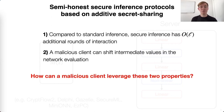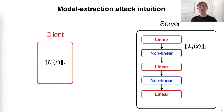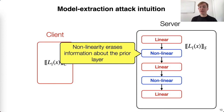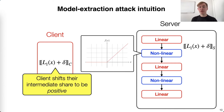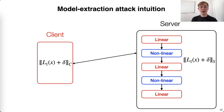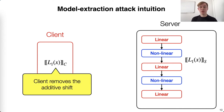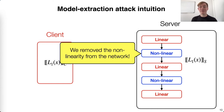So how can a malicious client leverage these two properties? I'll give a high-level explanation of the core intuition behind our attack. The client and server both hold secret shares of the output of the linear layer. The non-linear layer will make extraction difficult because it erases information about the prior layer. To get around this, recall that on positive inputs, ReLU acts as the identity function. So we can have the malicious client add a shift to their secret share, which forces the intermediate value to be positive and thus unaffected by the ReLU function. After the non-linear layer, the client can remove their shift and finish evaluating as normal. We have just removed the non-linearity from the network evaluation — that's the core intuition behind our attack. By utilizing some additional techniques described in the paper, we obtain a solvable system of linear equations describing the model weights.